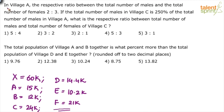Next question: in village A, the ratio between total males and total females is 2:3. If the total number of males in village C is 250 percent of the total number of males in village A, what is the respective ratio between total males and total females in village C? Break up village A as per the given ratio, find the number of males, take 250 percent of that to get males in C, then find females in C and get the ratio.